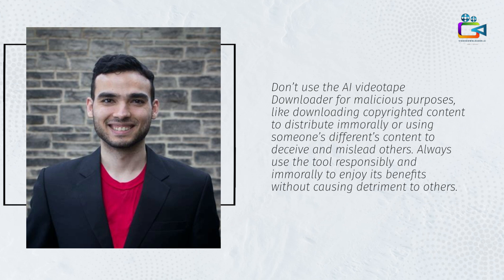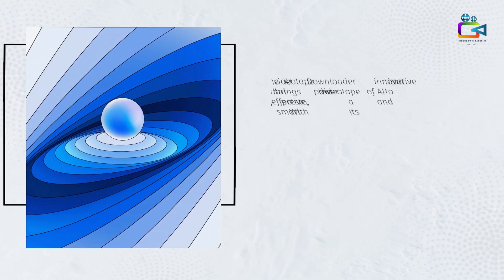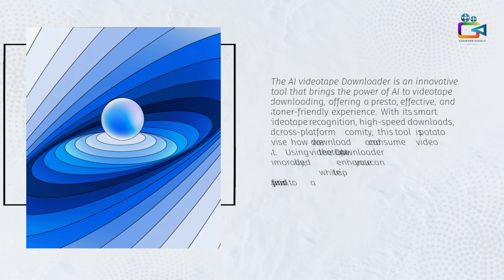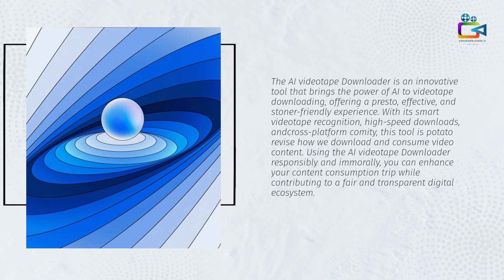Always use the tool responsibly and ethically to enjoy its benefits without causing harm to others. The AI Video Downloader is an innovative tool that brings the power of AI to video downloading, offering a fast, effective, and user-friendly experience. With its smart video recognition, high-speed downloads, and cross-platform compatibility, this tool is set to revolutionize how we download and consume video content. Using the AI Video Downloader responsibly and ethically, you can enhance your content consumption journey while contributing to a fair and transparent digital ecosystem.